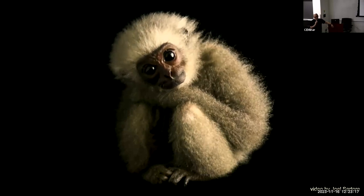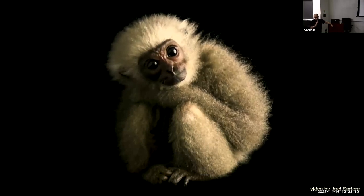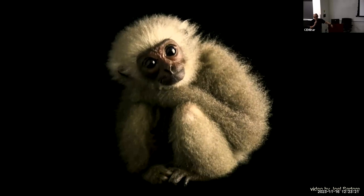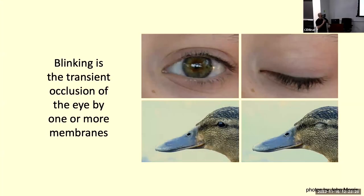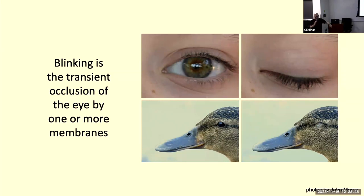I'm going to make the case that this behavior — blinking — originated during the water-to-land transition of tetrapods. Lots of animals blink, not just us, and in all kinds of different ways. Blinking is simply the periodic occlusion of the eye by a membrane. Which membrane depends on the animal: we blink mostly by lowering our upper eyelid, other animals blink by only raising their lower eyelid, and some animals use third eyelids called nictitating membranes that sweep laterally across the eye.